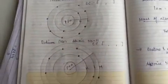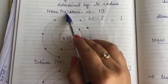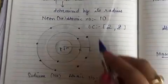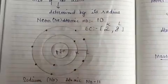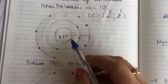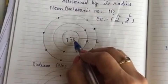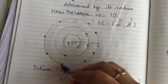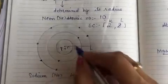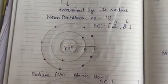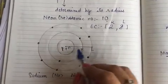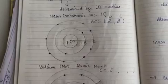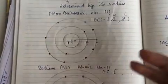Let's take two examples. First is Neon — symbol Ne, atomic number 10. We add 2 electrons in the first orbit (K shell) and 8 electrons in the second orbit (L shell), total 10 electrons. The K shell holds maximum 2 and L shell maximum 8 electrons. The radius of an atom is the distance from the nucleus to the outermost orbit. So, the greater this distance, the larger the atom's size.